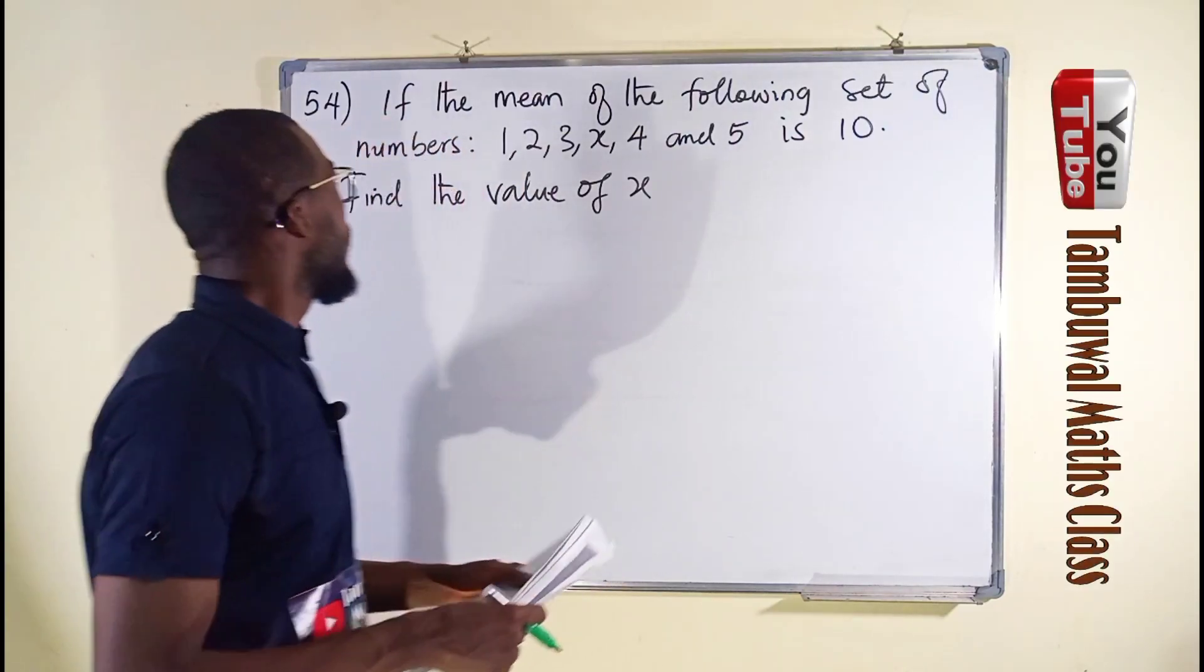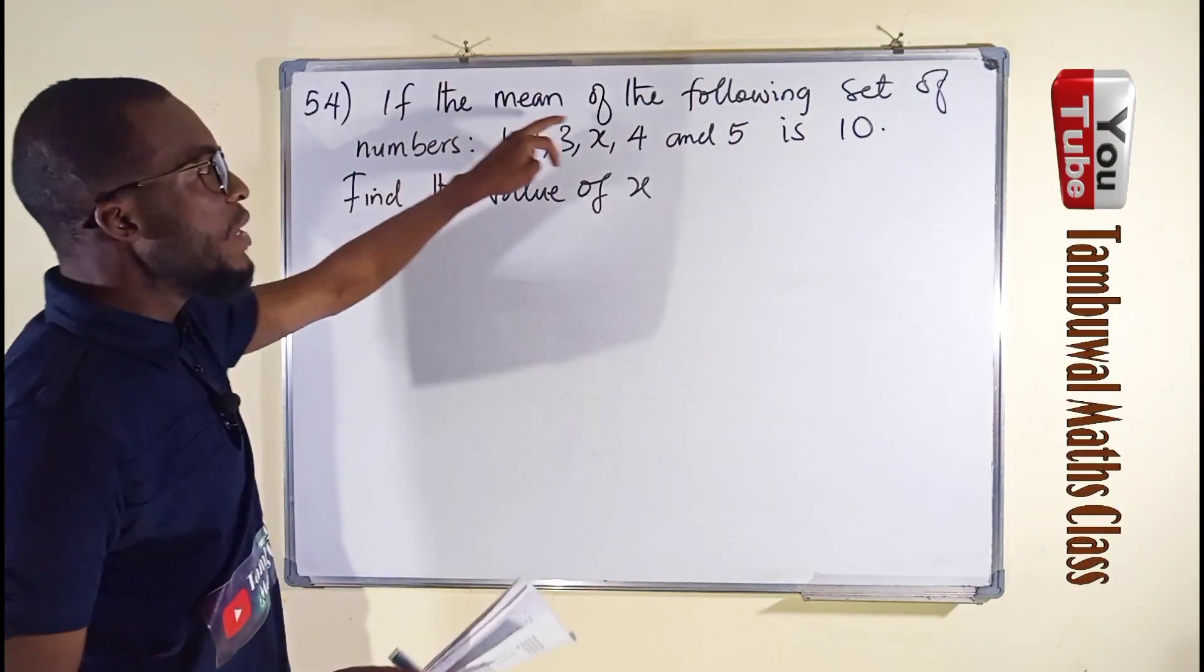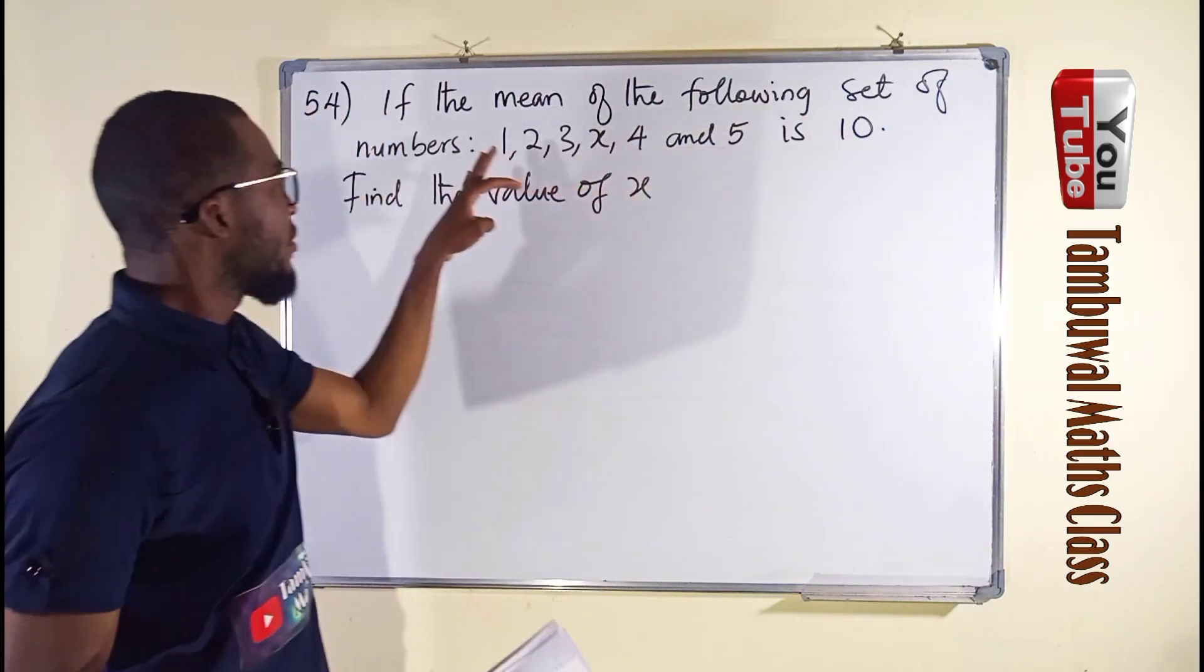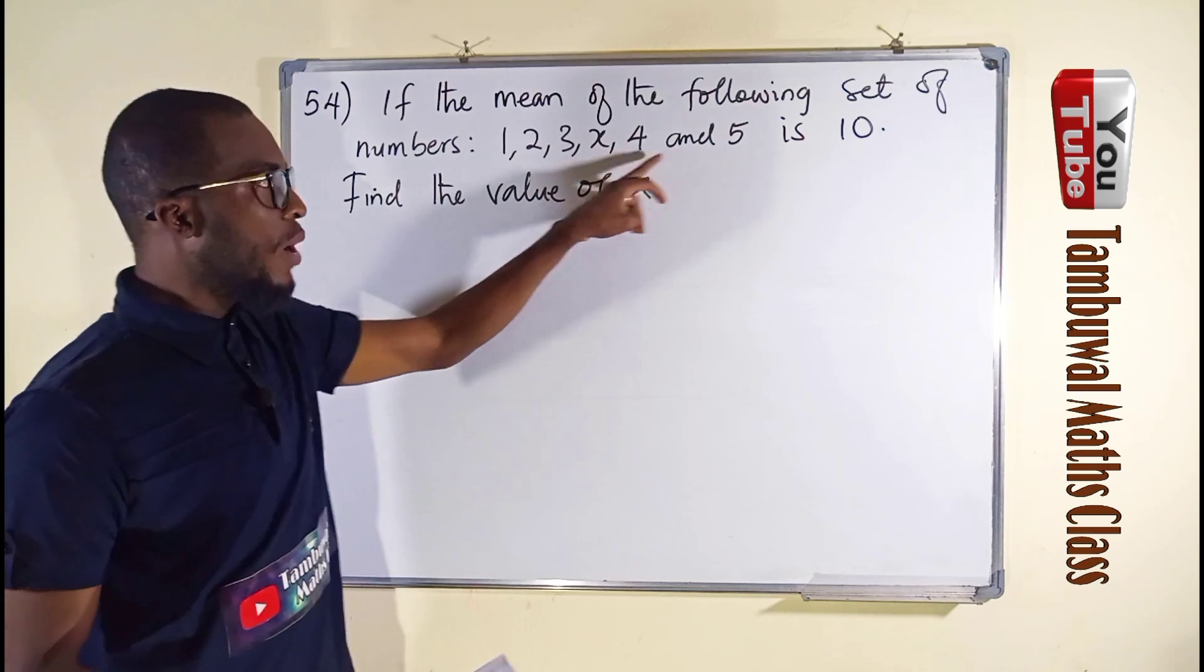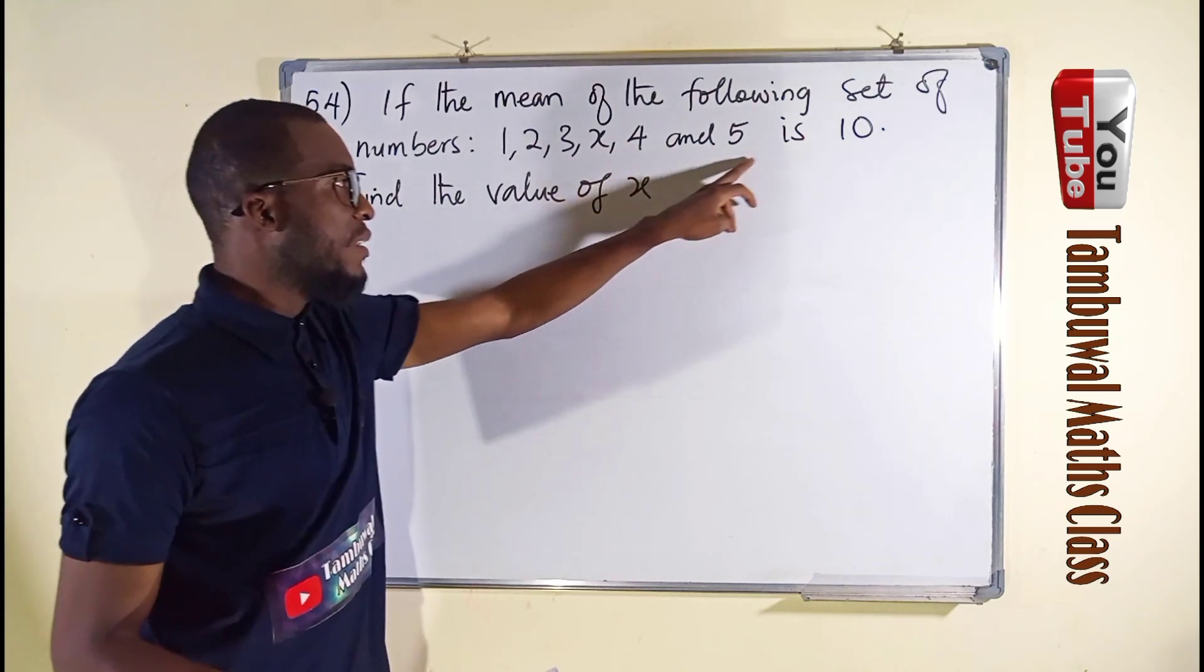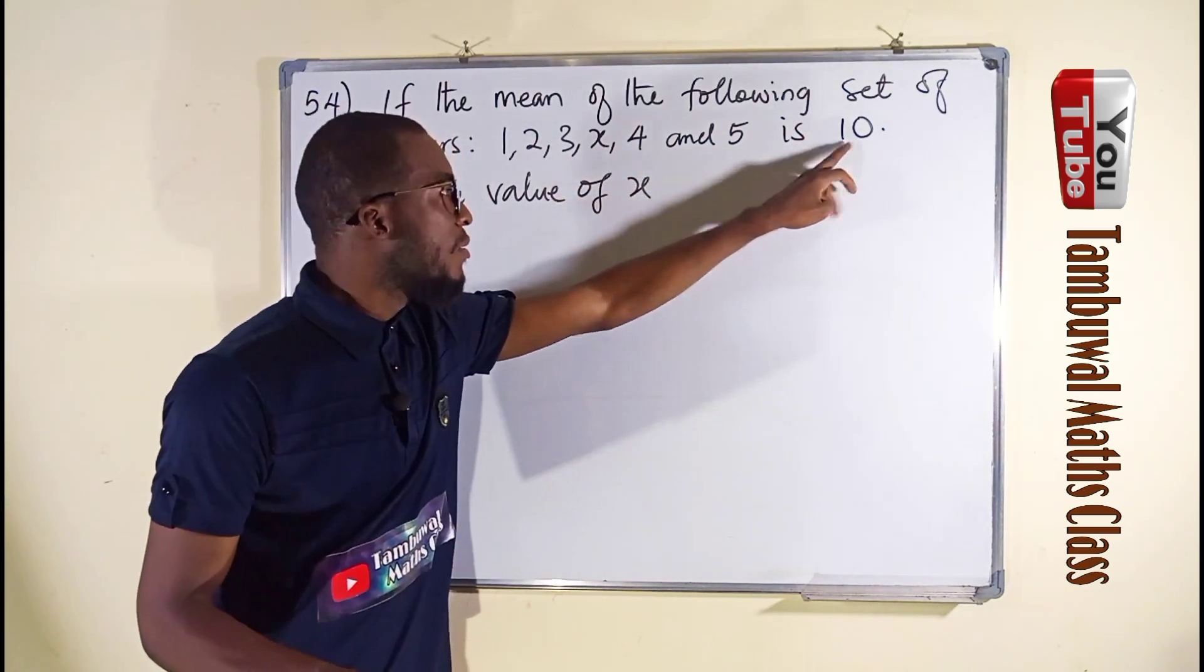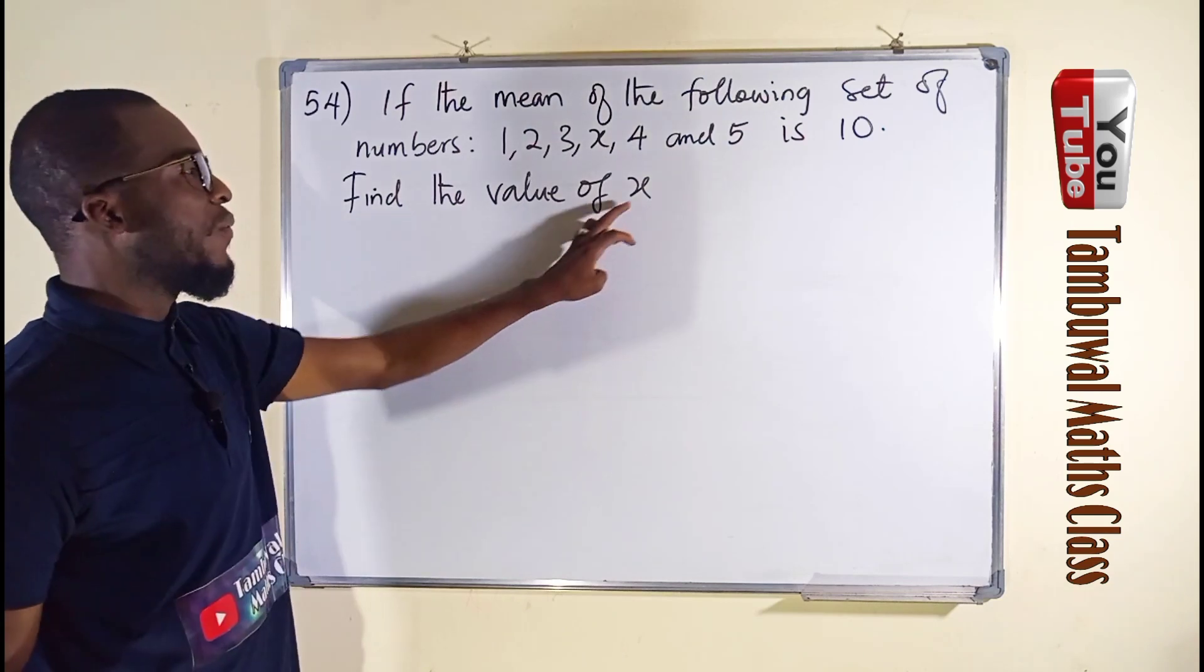Question number 54. If the mean of the following set of numbers, you see the numbers here, 1, 2, 3, x, 4, and 5, we are told that it's 10. Find the value of x.